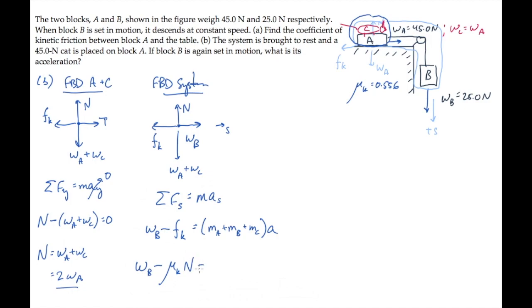Substitute friction force equals mu sub k times n, with the masses equal to their weights divided by g, and the normal force twice the weight of A, and solve this for the acceleration A. You get this expression.